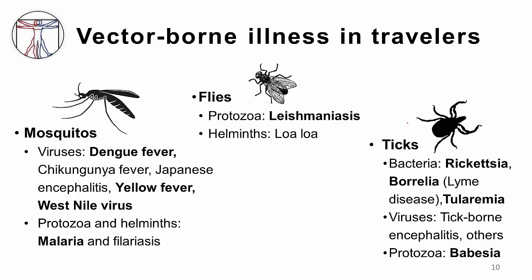Regarding vector-borne illnesses, there are many different insects that can spread infections in developing countries. Mosquitoes are most common — dengue, chikungunya fever, Japanese encephalitis, yellow fever, and West Nile virus are all mosquito-borne. Mosquitoes can also spread protozoa and helminth infections like malaria and filariasis. Flies spread infections like leishmaniasis and loa loa. Ticks spread rickettsial infections, African tick bite fever, Borrelia infections like Lyme disease, tularemia, viral infections like tick-borne encephalitis, and protozoal infections like Babesia.